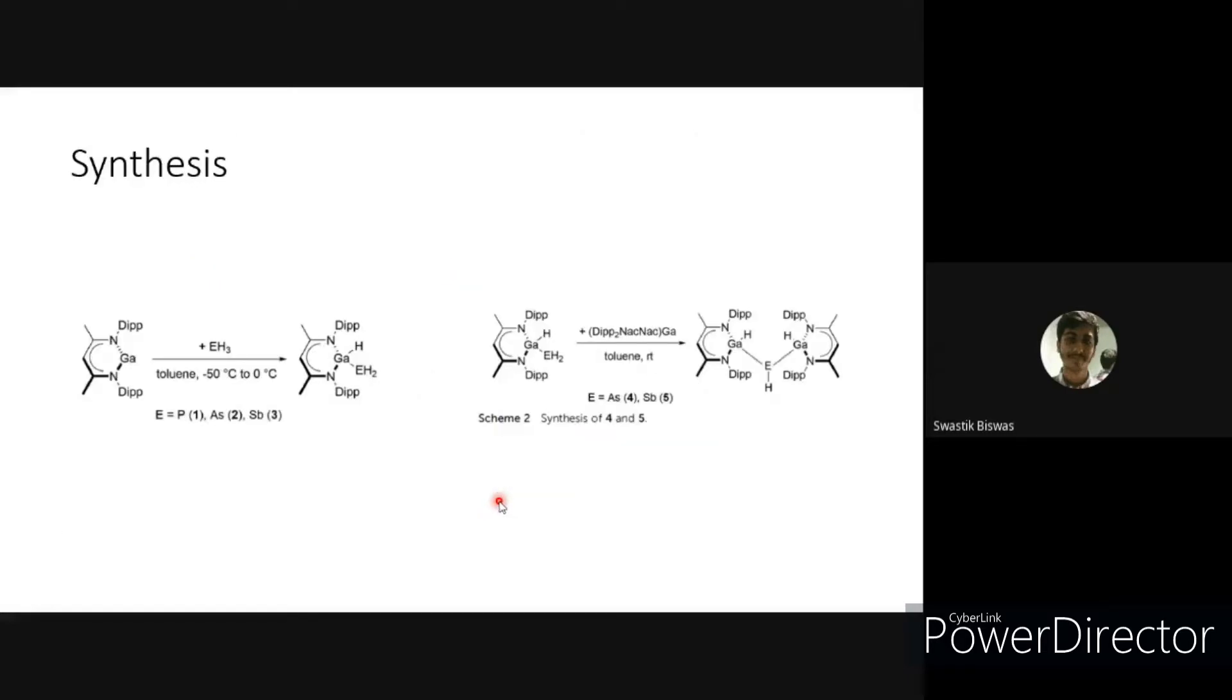In general, reported stibanes were prepared from RSbCl2 and R2SbCl species which were hydrogenated with common hydrogenation reagents like LiAlH4, via methanolysis of silylated stibanes, or by hydrogen atom abstraction from Cp star ligand.